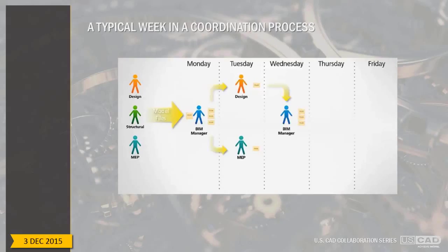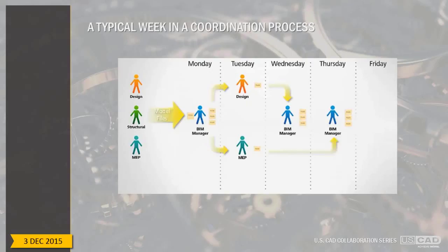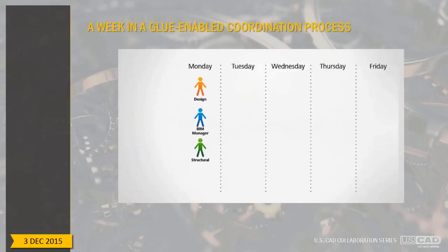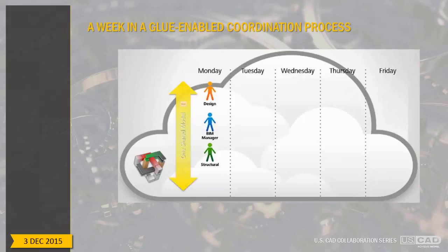After reviewing the data, disciplines throw it back to the BIM manager who collects and gathers it. The MEP might take a day longer. The next day, more information goes to the BIM manager to compile compared to the previous day, and then there's this big coordination meeting. In a Glue-enabled coordination process, notice everybody's working on Monday. With everybody working in this cloud scenario, everybody's working on one shared goal — no throwing information across the wall.